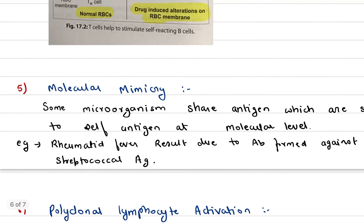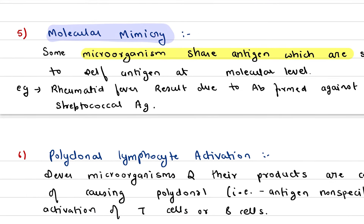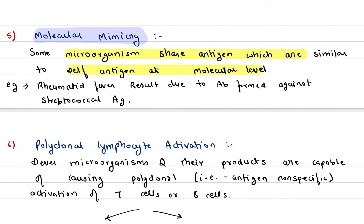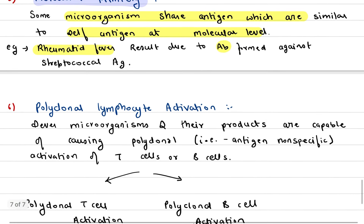Fifth is molecular mimicry. Many microorganisms share antigens that are molecularly similar to our self-antigens. For example, in Acute Rheumatic Fever, antibodies are produced against streptococcal antigens. But because of molecular mimicry, these antibodies cannot differentiate streptococcal antigens from our own cardiac antigens, leading to an autoimmune disorder.